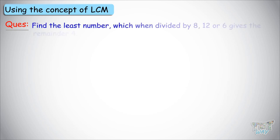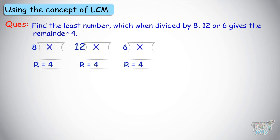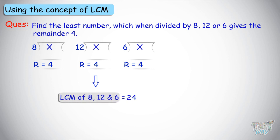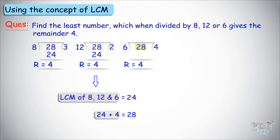Now we need to find the least number which, when divided by 8, 12, or 6, gives a remainder of 4. This is a similar question. First, we find the LCM of 8, 12, and 6, which comes out to be 24. Then we add 4 to 24: 24 + 4 = 28. Let's check: 28 divided by 8 gives remainder 4; 28 divided by 12 gives remainder 4; 28 divided by 6 gives remainder 4. This is how we solve such problems.